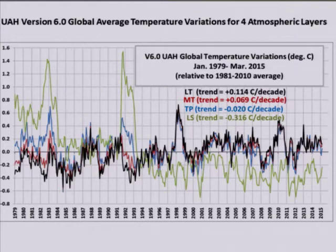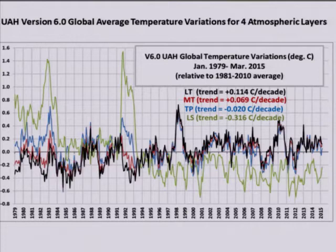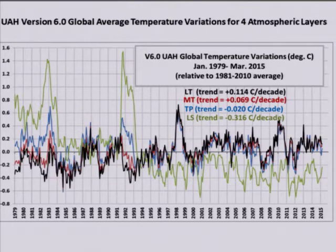This is a time series of the nominal layer measurements. The green curve with the really big excursions is the lower stratosphere — there were big warm events from El Chichón and Mount Pinatubo that caused those warm events. The other layers are in different colors, showing monthly temperatures since 1979.